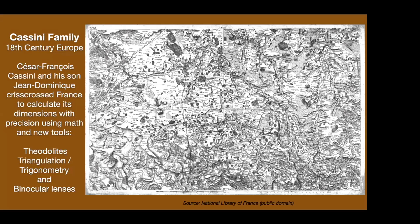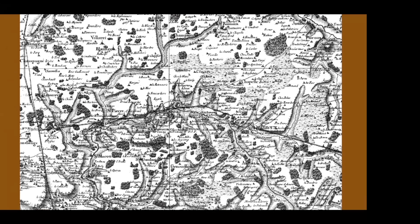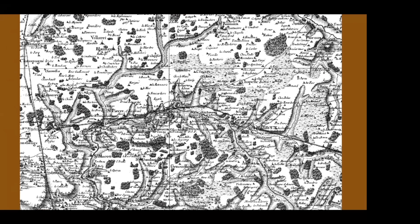Maps as we know them today started coming back in about the 18th century, the 1700s. We can thank the Cassini family — César François and Jean Dominique — who used new tools and science, mathematics, theodolites, triangulation, trigonometry, and new binocular lenses to map Europe, primarily France. Look at the detail in their maps — very accurate. They used longitude, latitude, and contours, putting in place names, rivers, and that looks like maps as we know them today.